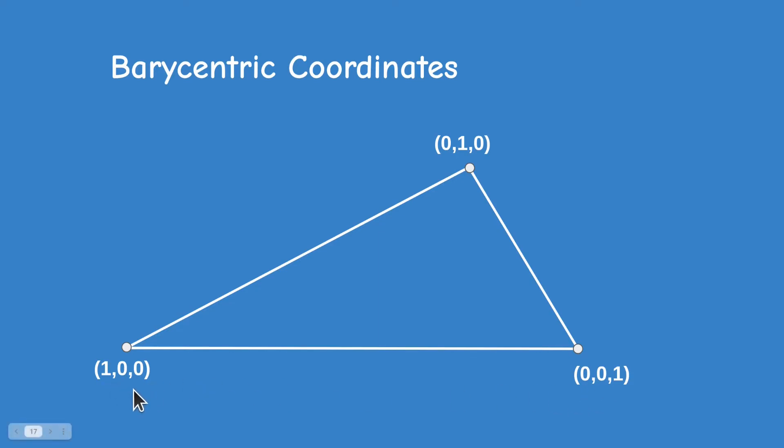Each component represents the weight of the corresponding vertex. When we are standing exactly on a vertex, we have 100% weight of that vertex and 0 weight of the other two. This is why we have a single 1 component and two 0 components. When we move from one vertex into the triangle, the weight of that vertex starts dropping while the weight of the other two increases. But the sum will always be 1.